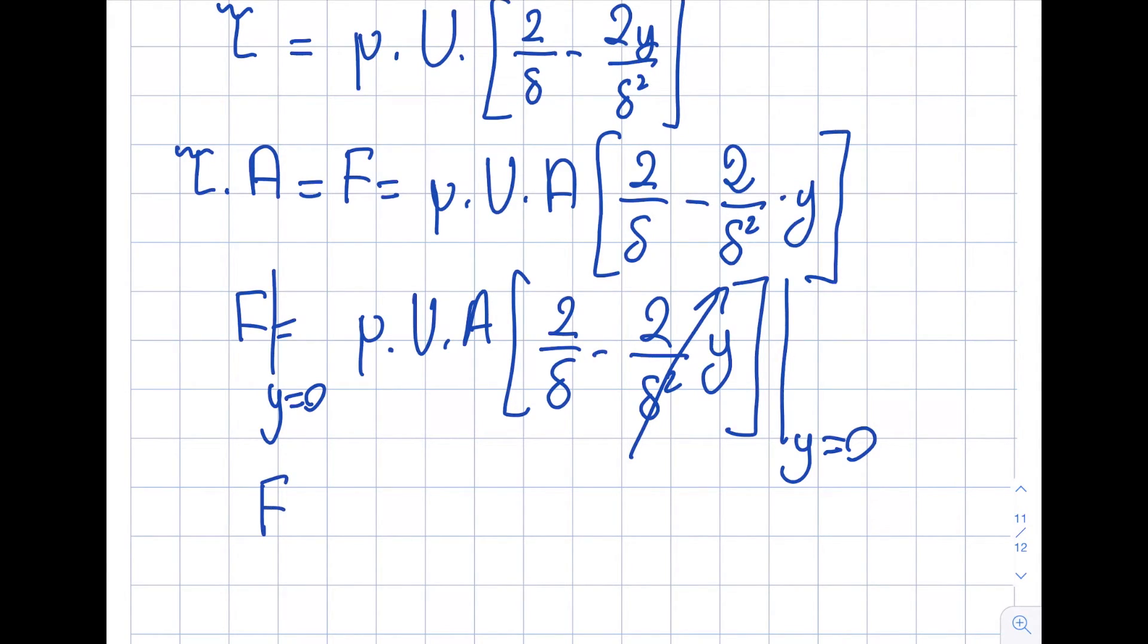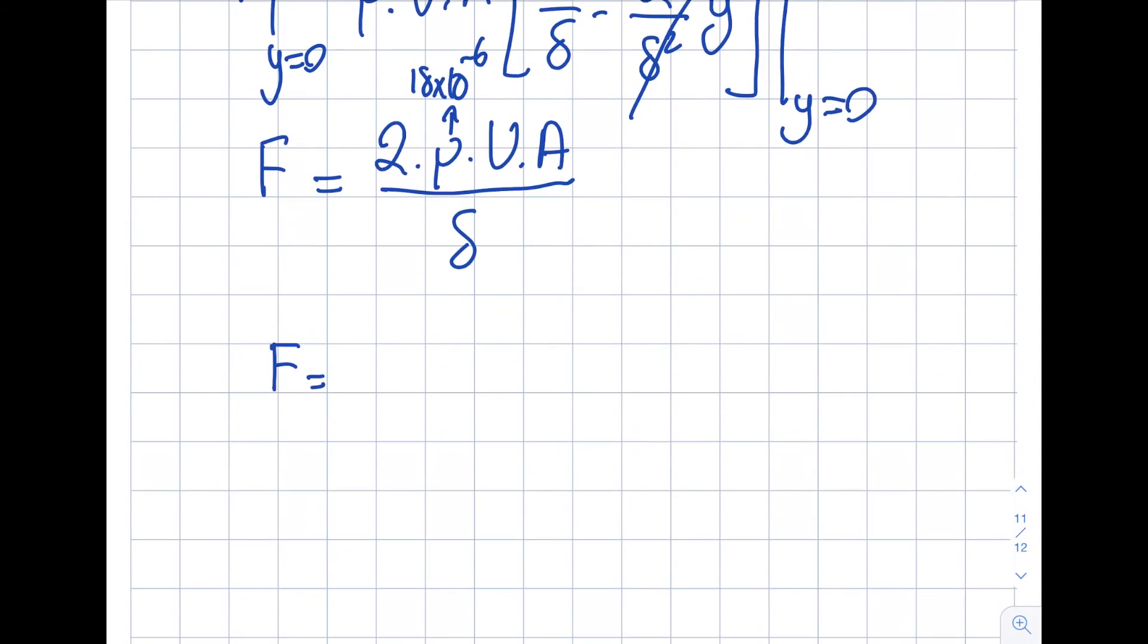So my force at the building will be equal to 2 viscosity U A divided by delta. In this problem I gave you the viscosity value of air as 18 times 10 to the minus 6. If I plug this in, this is going to be 36 times 10 to the minus 6 velocity of the free stream A divided by delta.